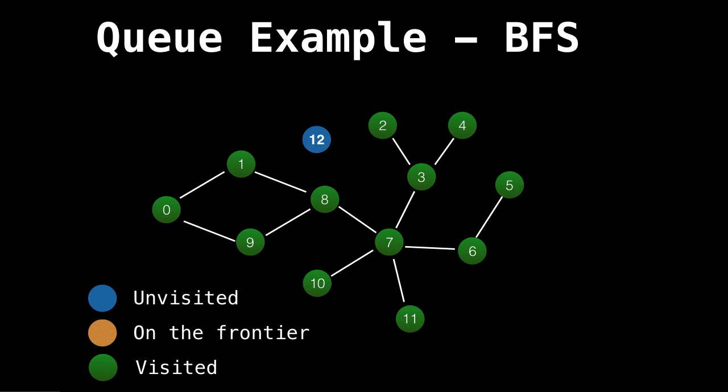Notice that there's twelve that is still unvisited, because twelve is a loner node on an island all by itself. So we're not able to reach it via breadth-first search, which is fine.